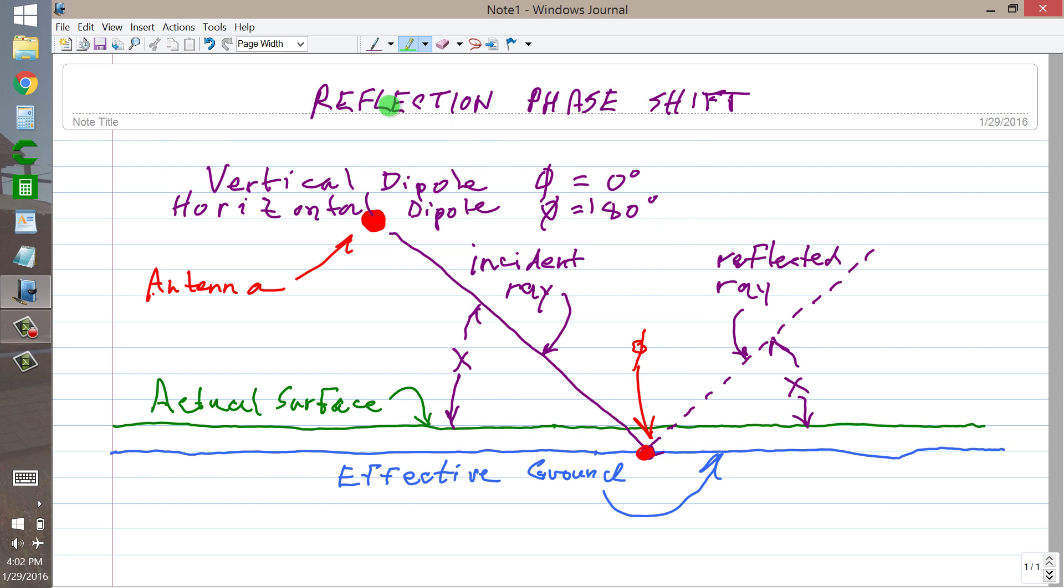However, the point of this video is that the phase shift for a horizontally polarized wave is 180 degrees when it strikes effective ground and 0 degrees for a vertically polarized electromagnetic wave. That's all you need to come off this video with.